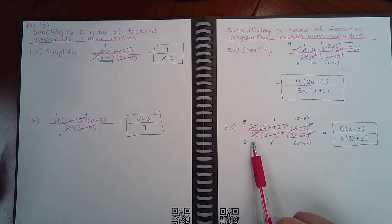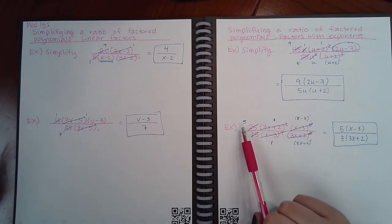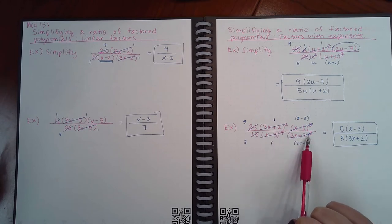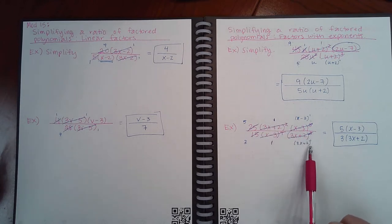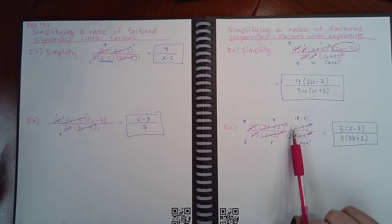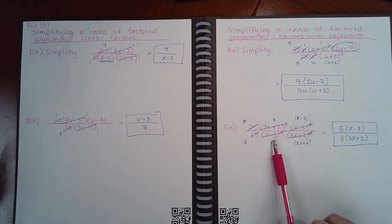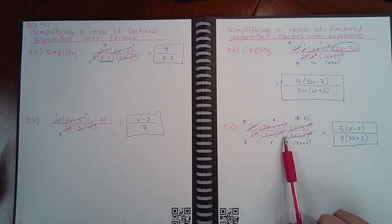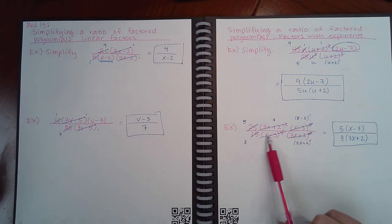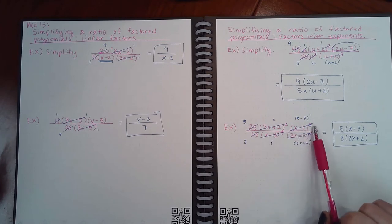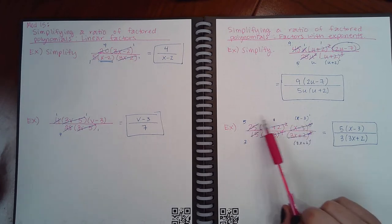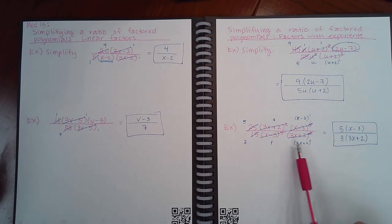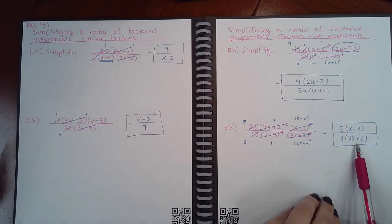Here, 25 and 15 can both be reduced by 5, giving 5 and 3. For (3x + 2)² and (3x + 2)³, we can cancel two factors, leaving one factor. For (x − 3)⁵ and (x − 3)⁴, we cancel four factors, leaving one factor in the numerator. The result is 5·(x − 3) in the numerator over 3·(3x + 2) in the denominator.